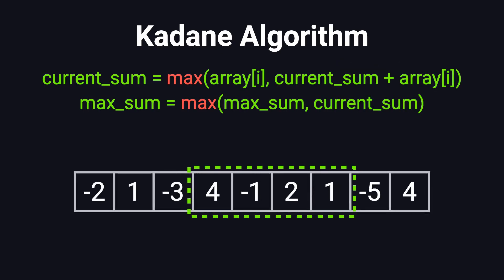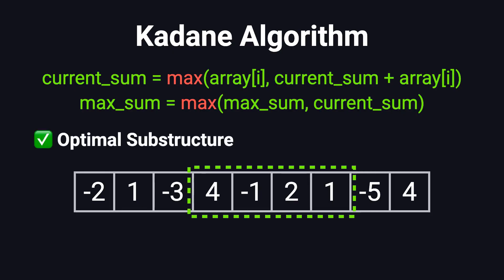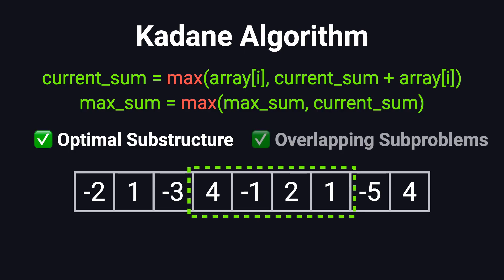Now let's wrap up by asking: why is Kadane's algorithm considered dynamic programming? First, it has optimal substructure — the best answer at position i depends only on the result at i-1, not on the full history. Second, it has overlapping subproblems. We're repeating the same kind of decision at each step, which we can handle efficiently using just a running state. Because it has both of these properties, we're able to solve the problem in such a clean and elegant way.